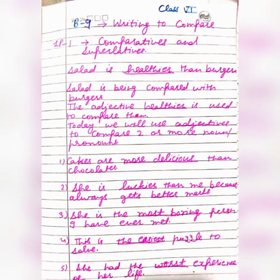Today we will use adjectives to compare two or more nouns or pronouns. Some sentences made by comparing two things: 'Cakes are more delicious than chocolates' — here cake and chocolates, two nouns, are compared. 'More delicious' is the comparative degree. 'She is luckier than me because she always gets better grades' — 'luckier' is the comparative degree of lucky. 'I am more comfortable in t-shirts than in shirts' — 'more comfortable' is the comparative degree of comfortable.